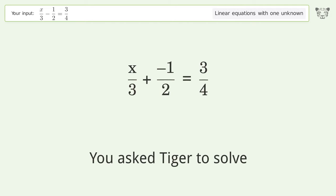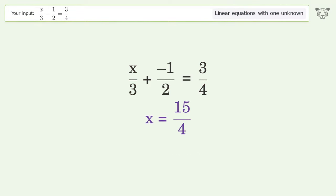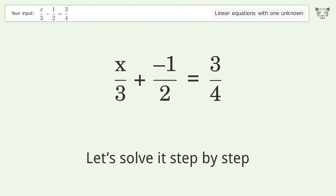You asked Tiger to solve this. It deals with linear equations with one unknown. The final result is x equals 15 over 4. Let's solve it step by step.